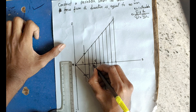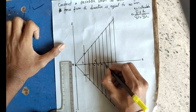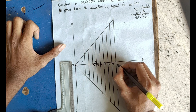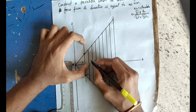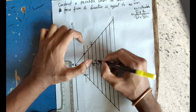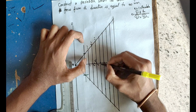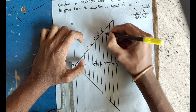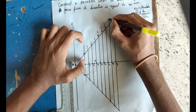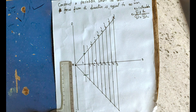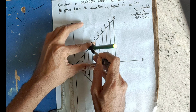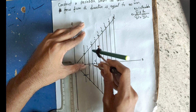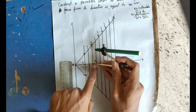Similarly, draw horizontal lines through each numbered point — 1, 2, 3, 4, 5, 6, 7, 8 — extending them perpendicular to the axis. Label corresponding points on the directrix side as 1-dash through 8-dash.